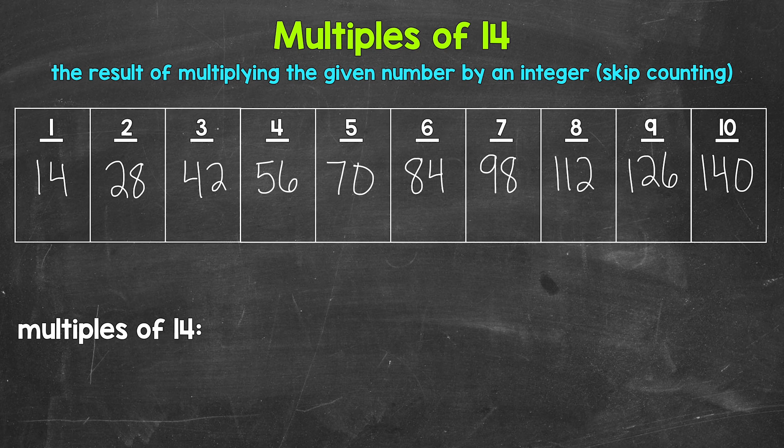Now let's write these multiples in a list below. And you'll notice we're just counting up by 14. Like I mentioned earlier, another way to think of multiples is to skip count.